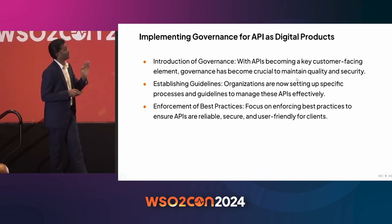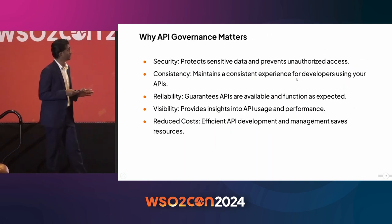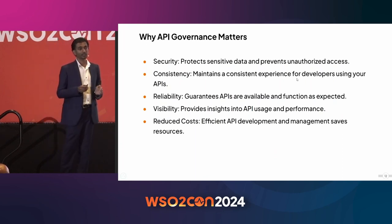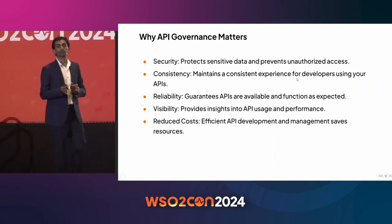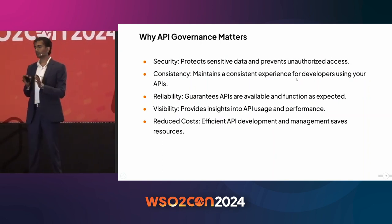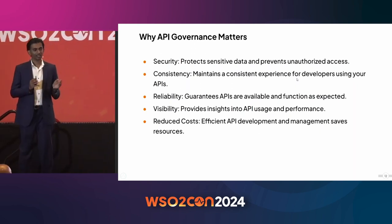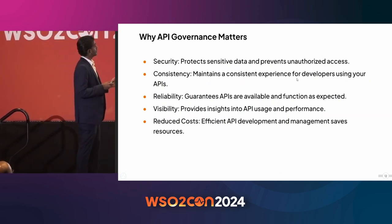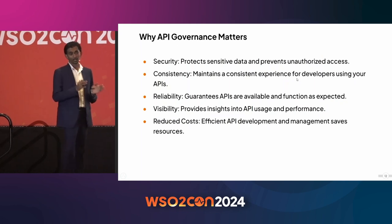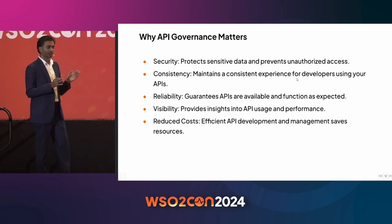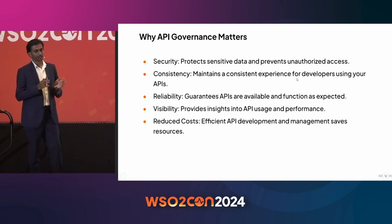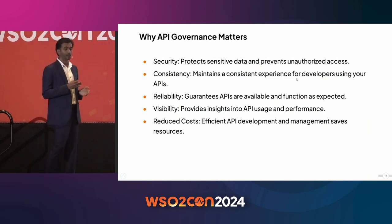Why do we need governance in the API management space? Security is one main thing. When you expose your API to outside, you're exposing your data. If you miss something, people can access or modify your data. We can start with simple things like mandating HTTPS and disabling HTTP, all the way up to having fine-grained, coarse-grained permission models for each and every resource. Consistency is another angle — if the experience and resource representation model differ between APIs, it becomes difficult for consumers.